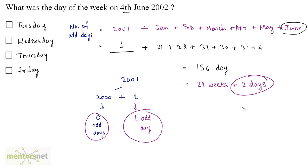So 0 days means Sunday, 1 day means Monday, 2 days means Tuesday. So this is Tuesday. So option A is the correct answer.